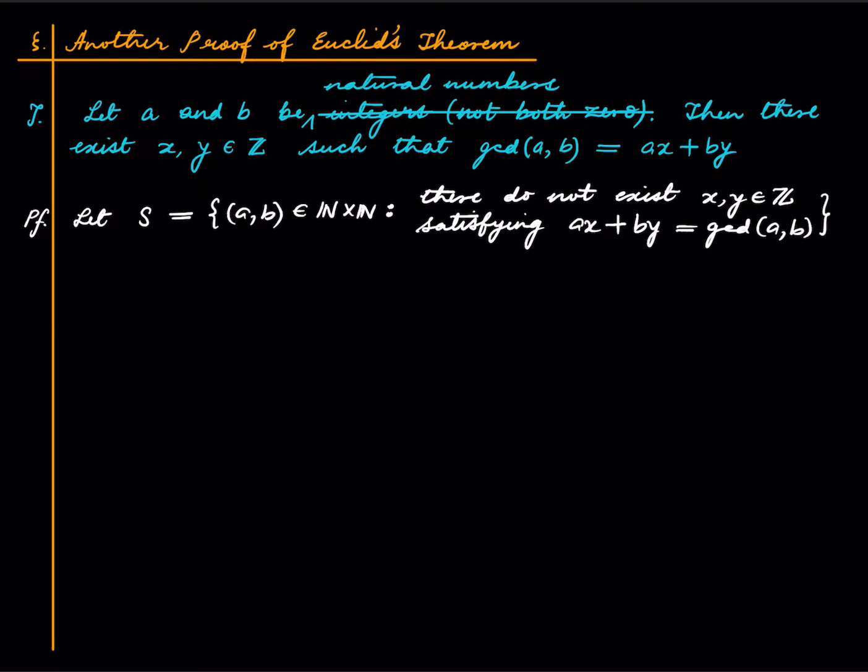So we collect all those pairs for which this theorem is false. So the goal is to show that S is empty. If we show that S is empty, we are done. So assume on the contrary that S is non-empty.